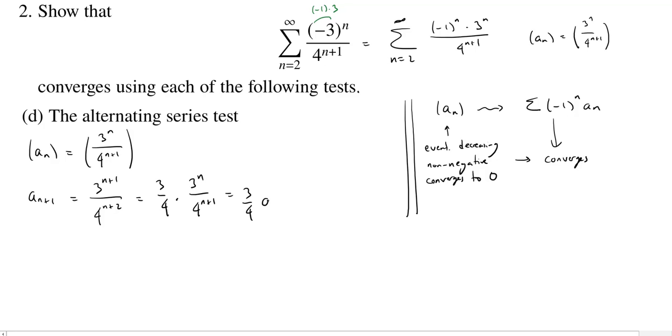Okay, or if you like, this is 3 fourths of a n. And if you take 3 fourths of a number, you're going to get something smaller, at least of a positive number. This is less than a sub n. Alright, so as I go out further in the sequence, the sequence terms get smaller, so it is eventually decreasing.